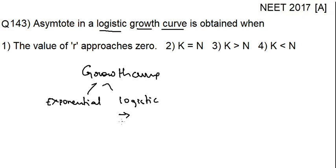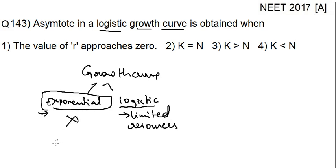In logistic there are limited resources. Practically exponential growth curve is never possible. In exponential you have unlimited resources, so this is never possible practically. In logistic growth curve you have limited resources. Now, let's draw the graph.